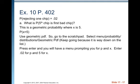We're going to use geometric PDF because it is a probability that X equals 5. Anytime it is just X equals one particular value, you're going to be using PDF. That's probability distribution function. If it's an inequality, you'll use cumulative distribution function or CDF. So we're going to use geometric PDF. We don't have to use the formula, so we're going to go to the scratch pad, select menu, probability, distributions, geometric PDF. Keep going because it is way down on the list. Press enter, and you will have a menu prompting you for P and X. Enter 0.02 for P and 5 for X. So the probability that X equals 5 is 0.0184.